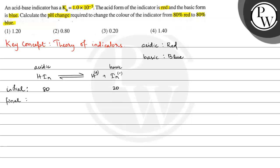Finally we have 80% blue, that means the basic form will be 80% and the acidic form will be 20%. So this is 20 and the basic form is 80.